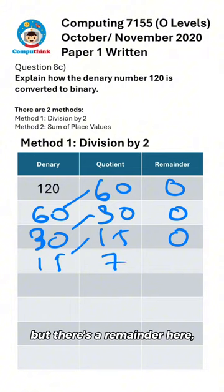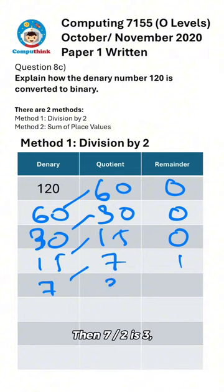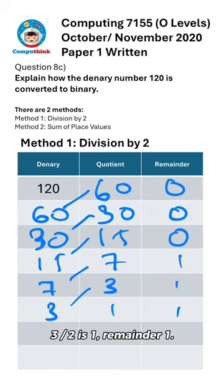15 divided by two is seven, but there's a remainder here, so remainder one. Then seven divided by two is three, remainder one. Three divided by two is one, remainder one. One divided by two is zero, remainder one.